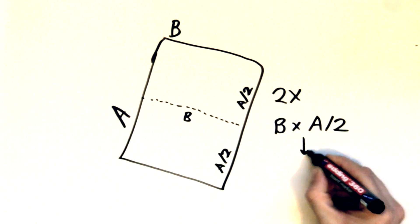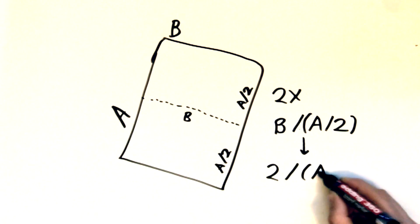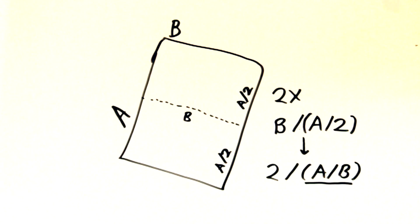Well the aspect ratio of this new paper is B by half an A which can be rewritten as 2 divided by A divided by B. This is useful because A divided by B is our old aspect ratio. So now we can plug in the old aspect ratio and calculate the new one.